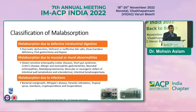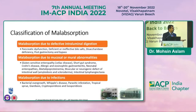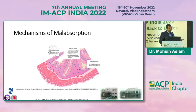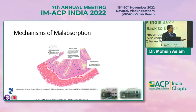Classification of malabsorption is based on where the defect is: either due to defective intraluminal digestion as seen in enzyme deficiencies, malabsorption due to mucosal or mural abnormalities as seen in celiac disease and other diseases affecting intestinal mucosa, and due to infections. In the luminal phase, enzyme deficiencies like enterokinase deficiency, deconjugation of bile acids, luminal bacterial overgrowth, or luminal dysmotility result in maldigestion and ultimately malabsorption.